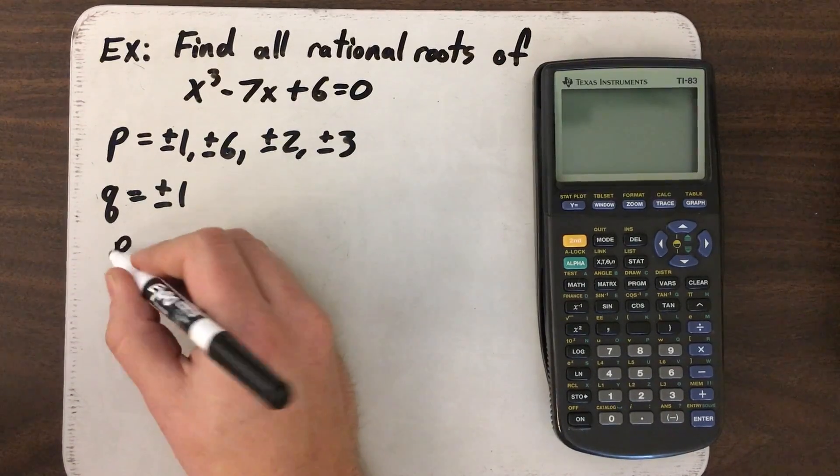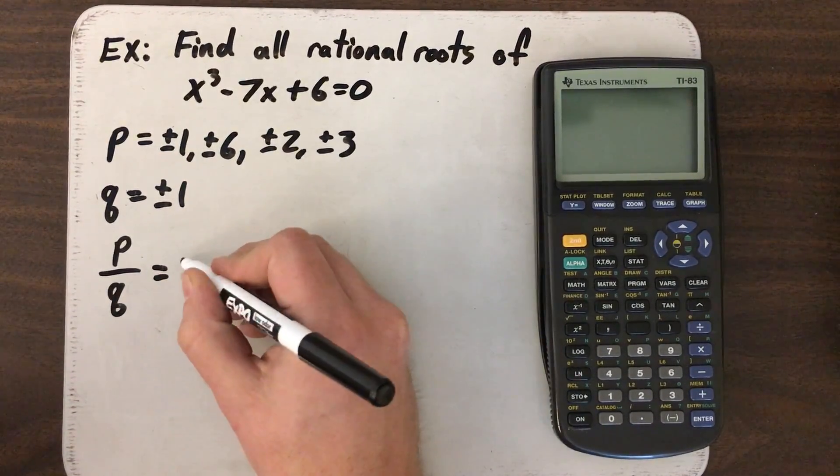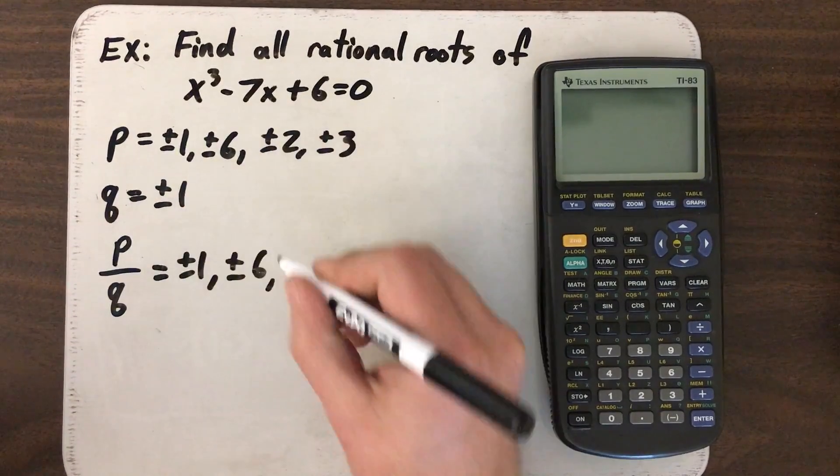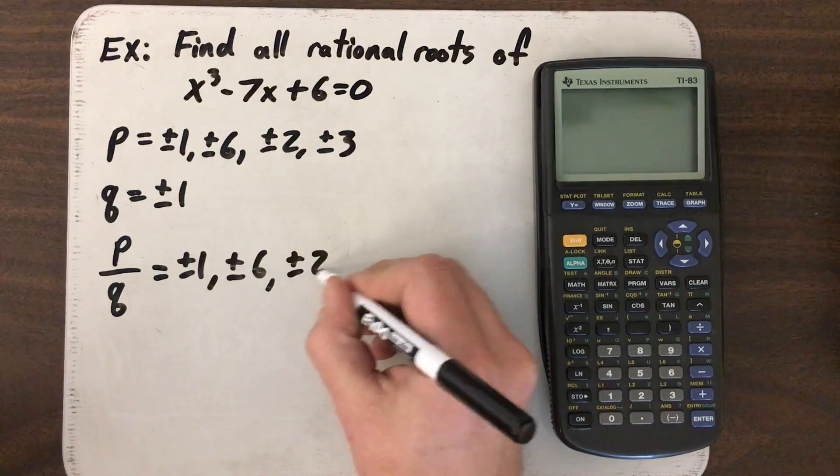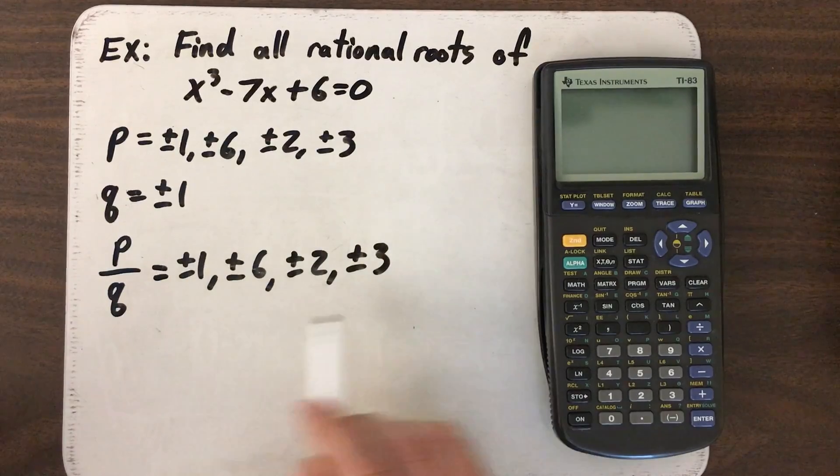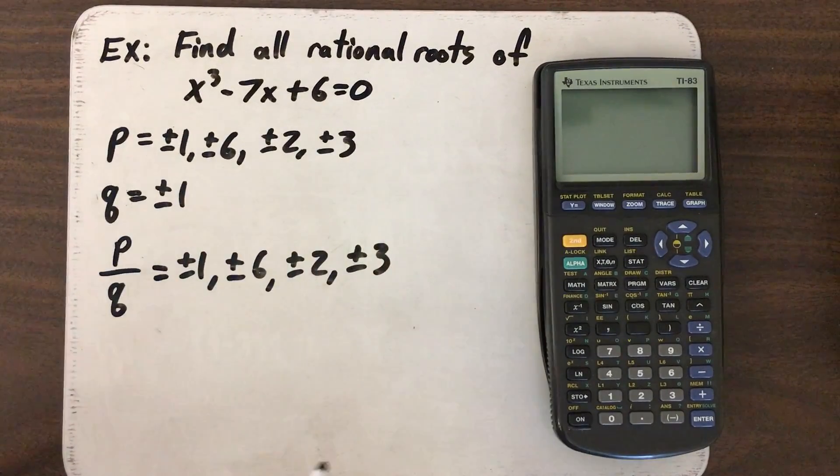So anyway, that means our possible P over Q values are, let's see, one over one, plus or minus one, six over one, so plus or minus six, two over one, which is plus or minus two, or three over one, which is plus or minus three. And our goal is to figure out which of these values is going to make this equation true. It's going to make zero equal zero.